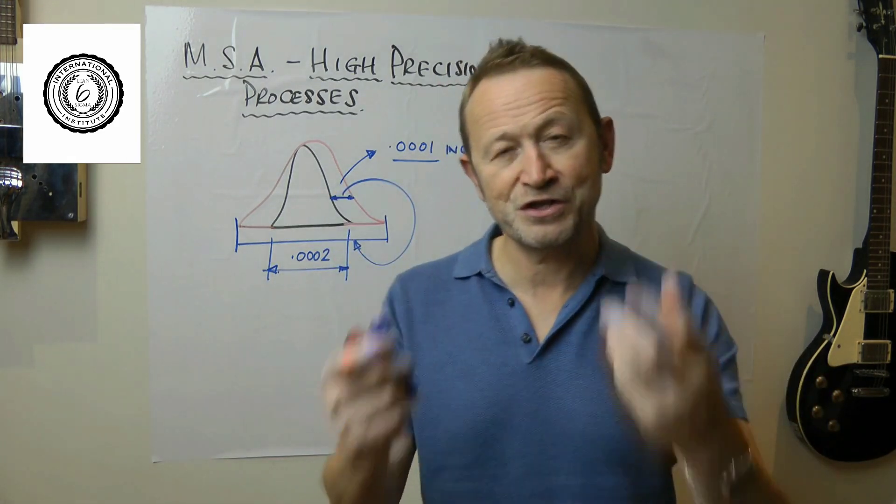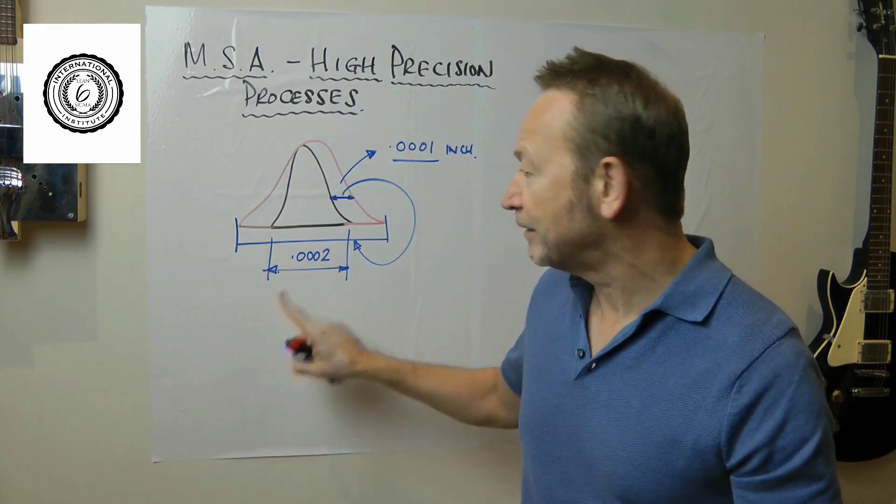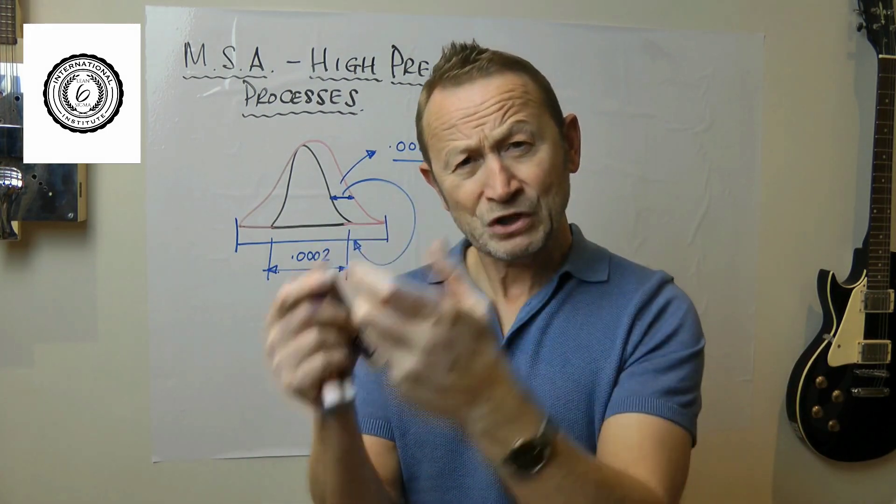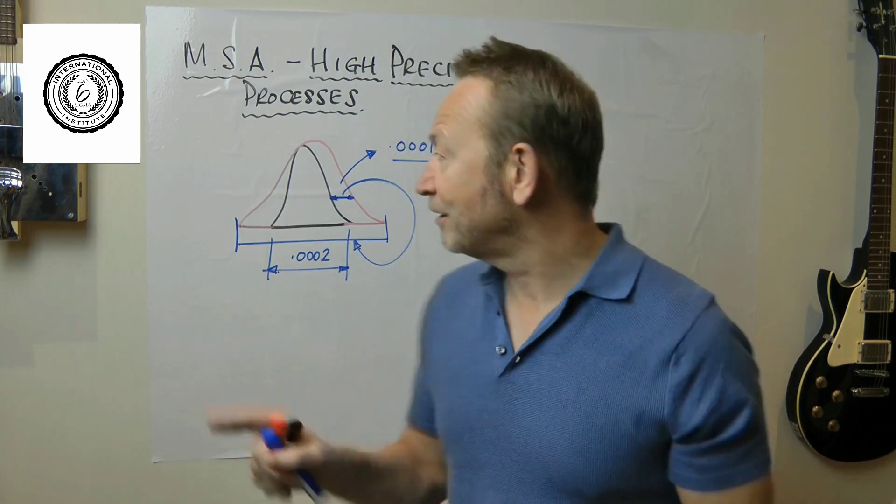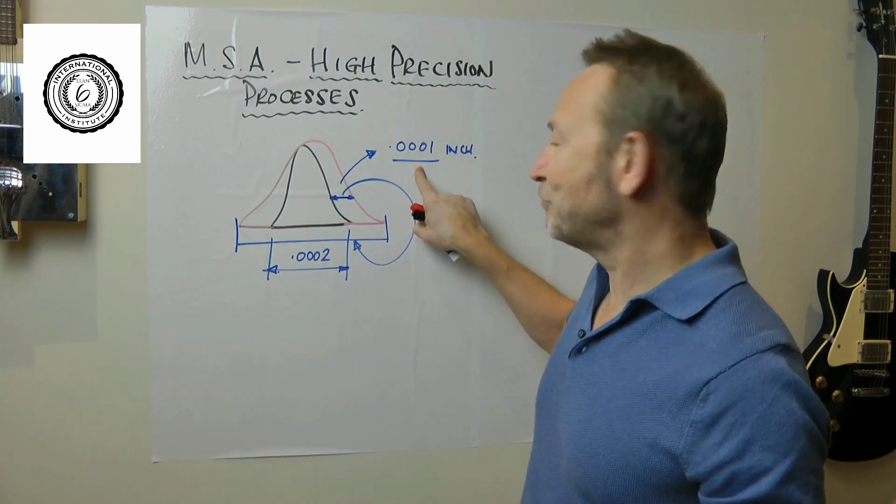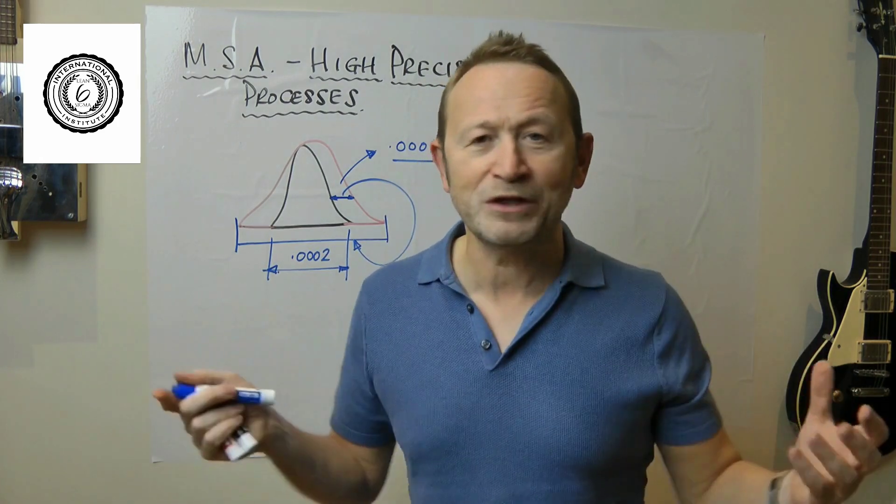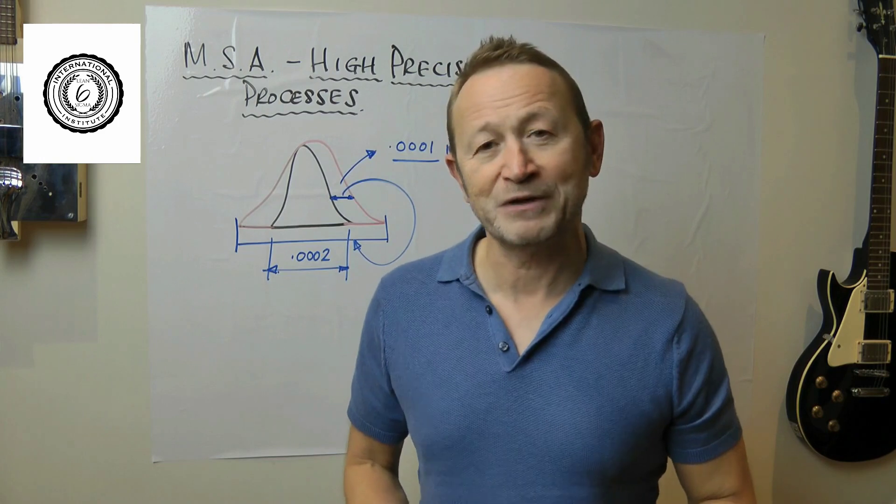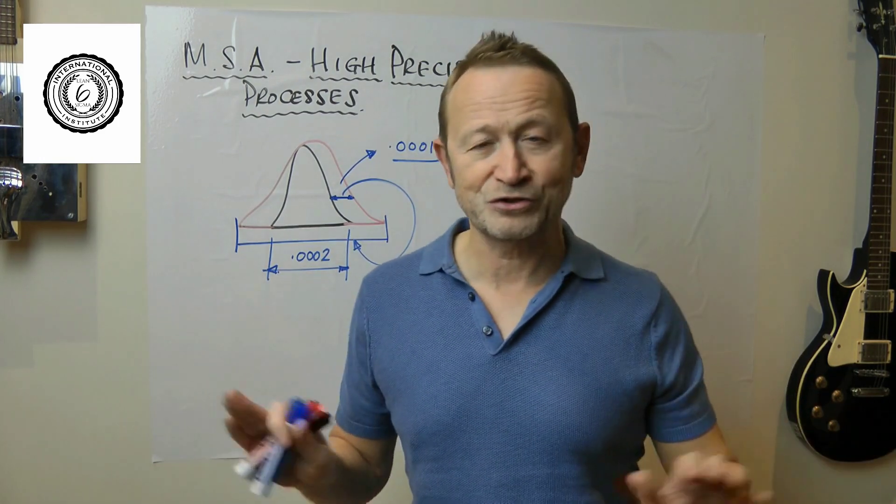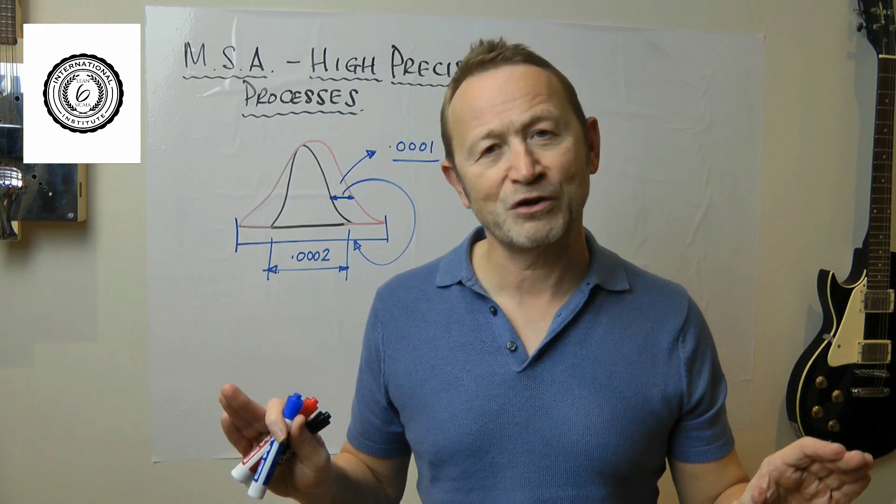Because we are doing a ratio, precision to the tolerance of the parts, precision to the total variability, the total variability is so tiny. Any error that you get here, it can only be big. It can only look like it's a poor measuring system.